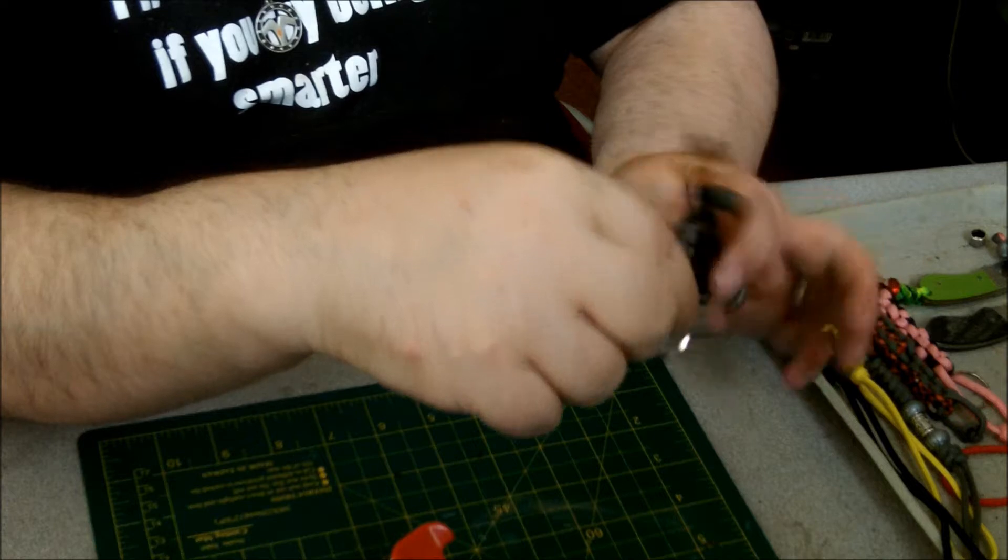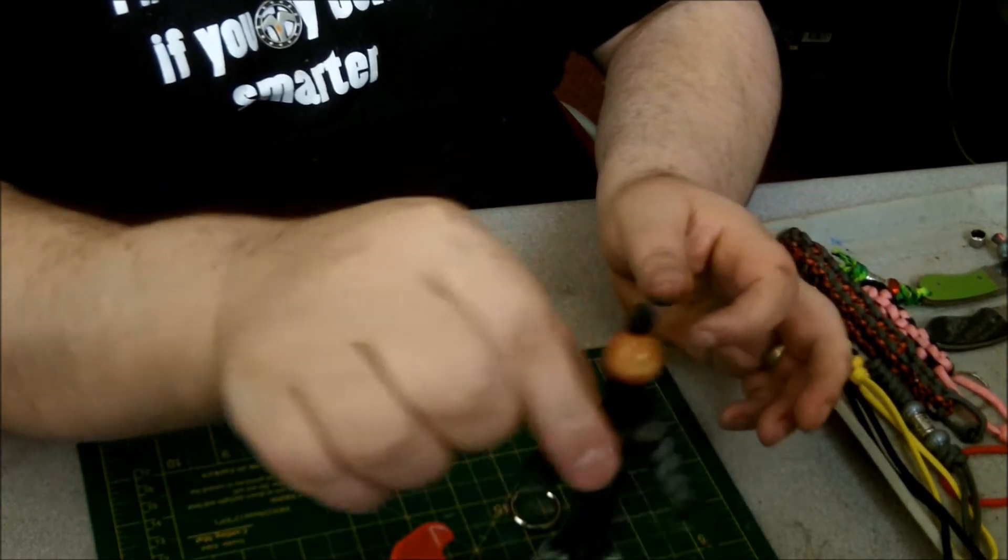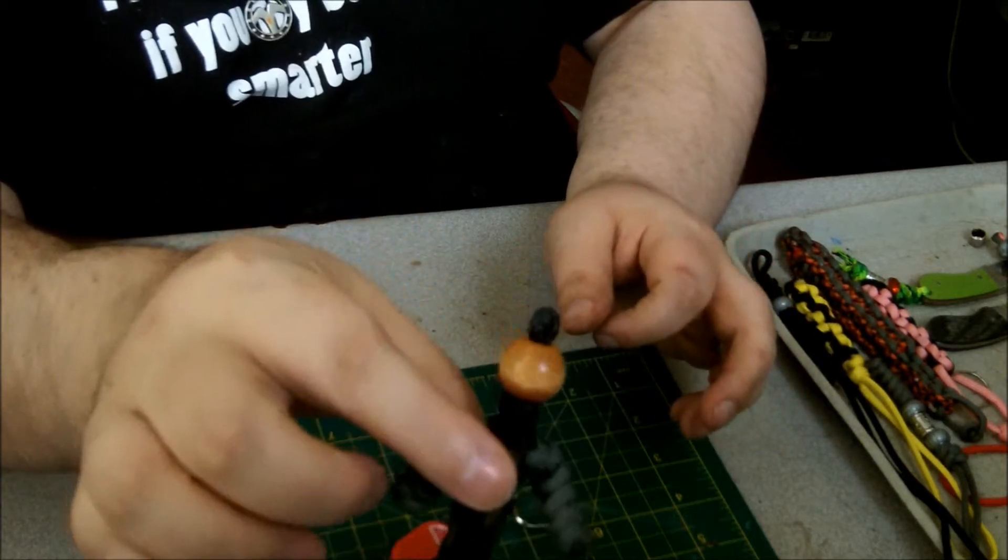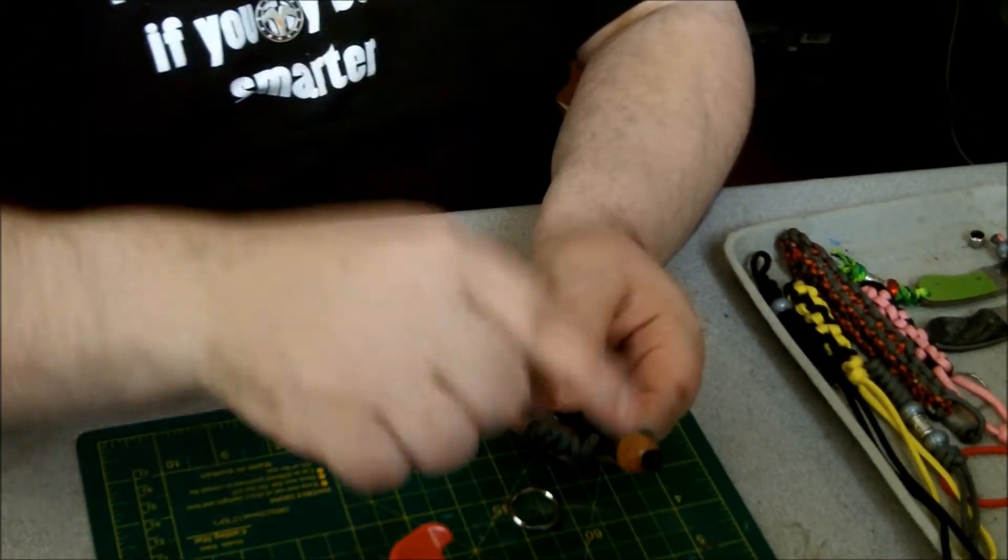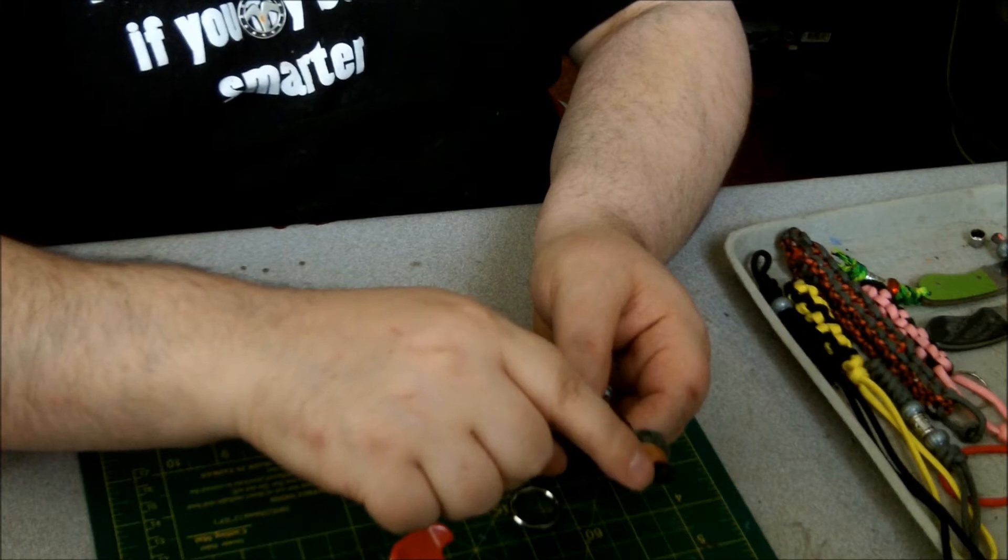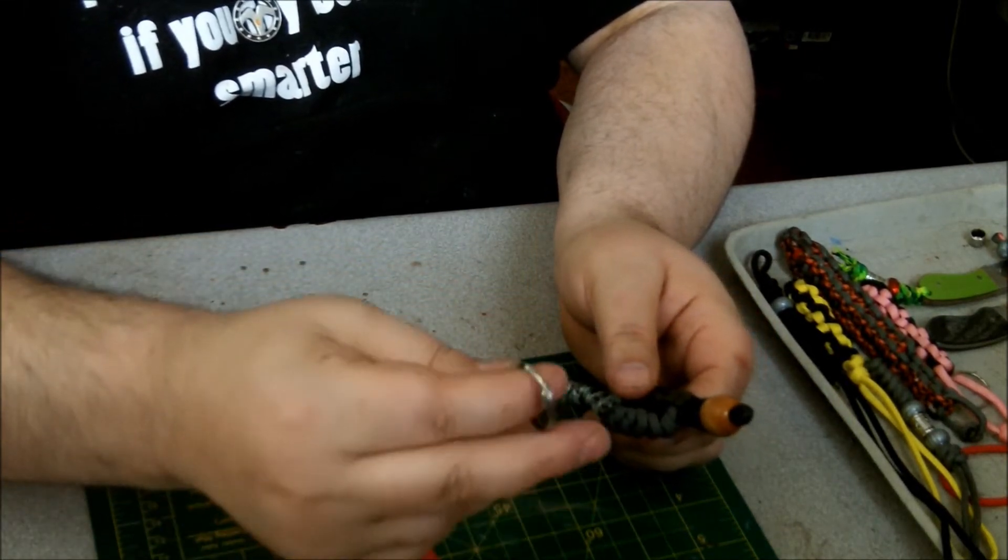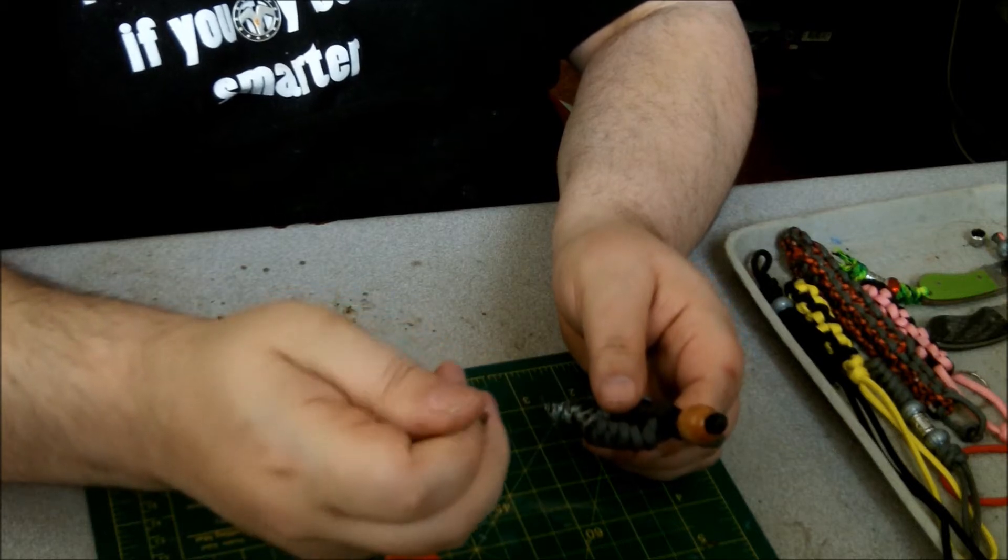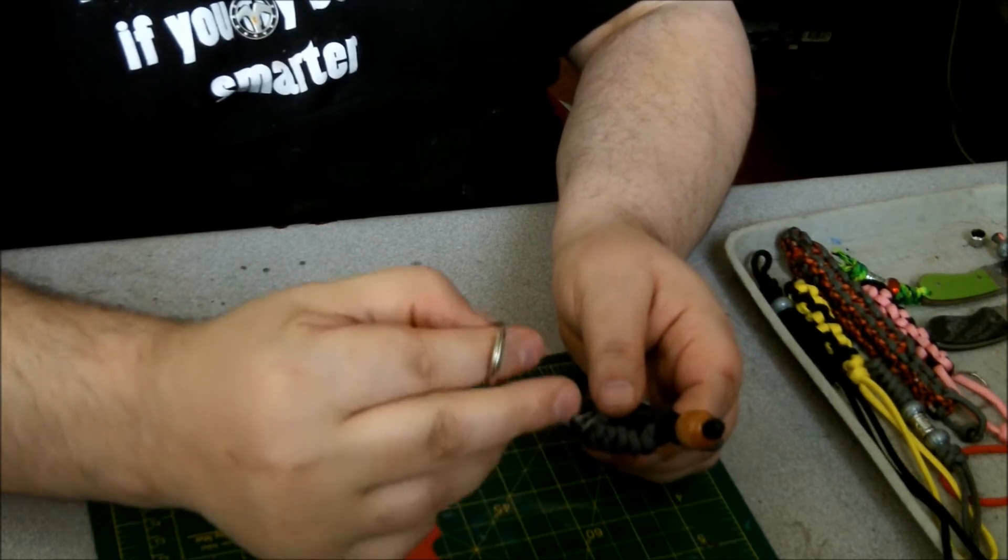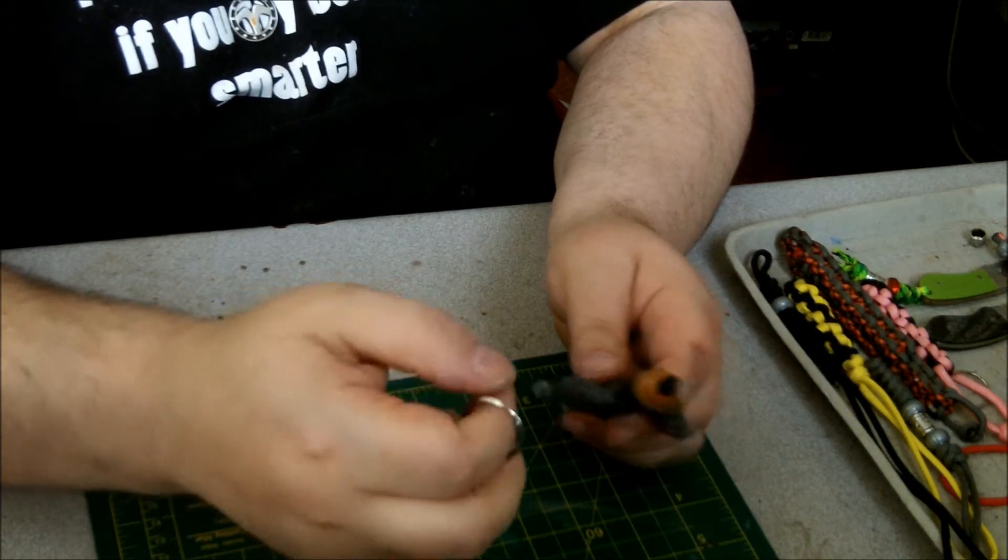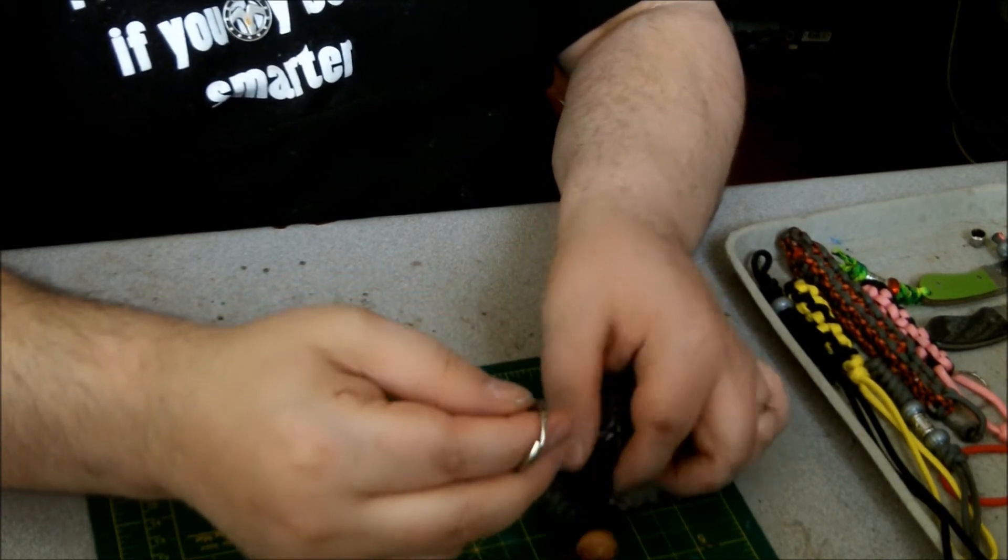Key fob. Here's a paracord dude that I just made, pretty cool. What I want to do is put a key ring up here. But as we all know, people that do paracord out there, it's really kind of hard to open up these stupid rings and get them threaded on the paracord.